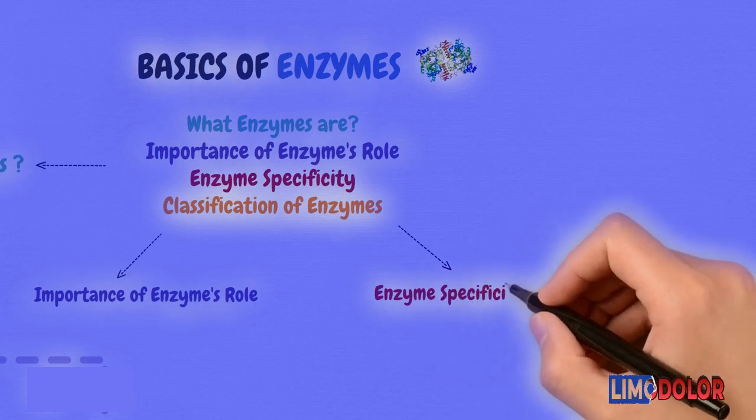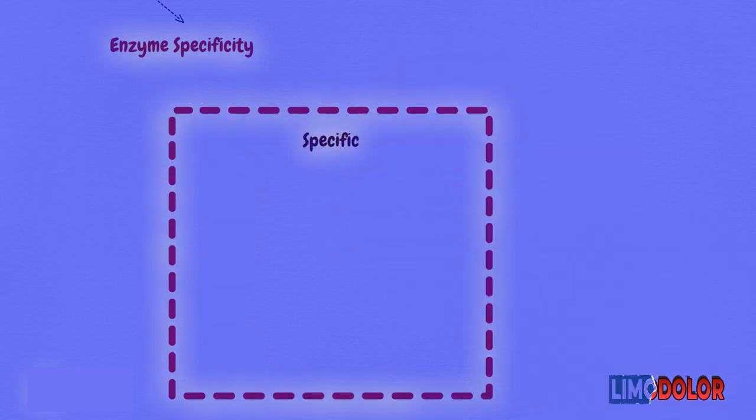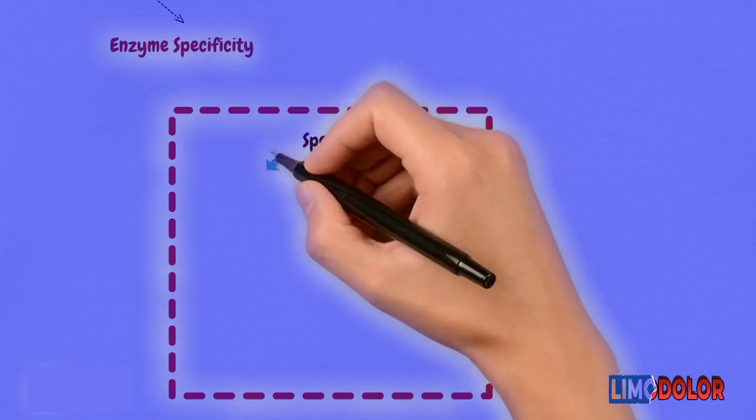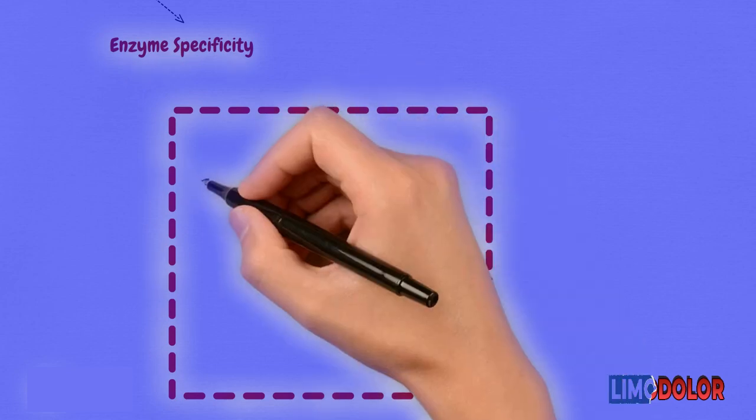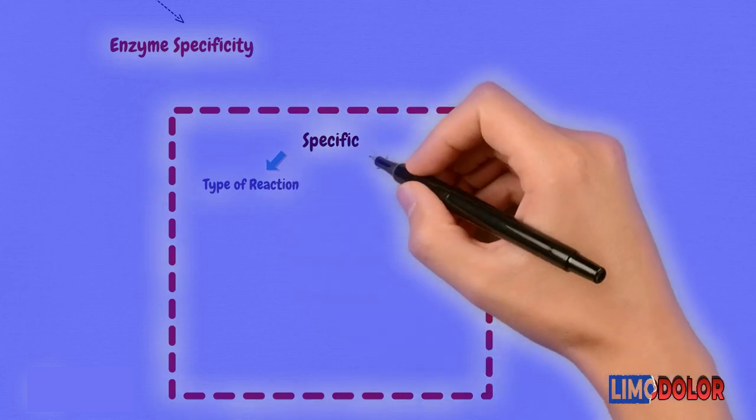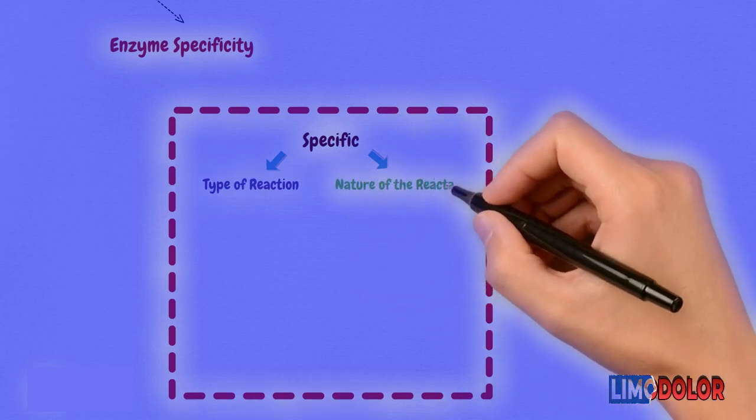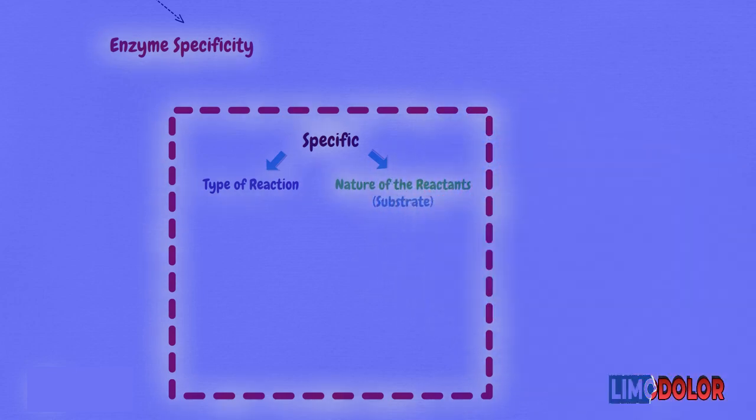Reaction and substrate specificity, which is really important to understand, is basically that the action of enzymes is usually very specific. This applies not only to the type of reaction being catalyzed, being reaction specificity, but also the nature of the reactants, which are the substrates that are involved in the reactions.